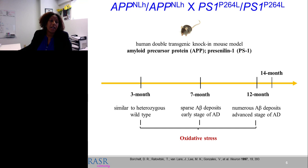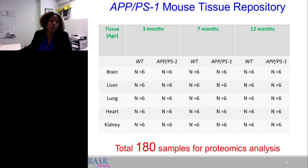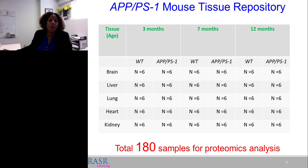In our tissue repository, we've collected tissue from different disease-stage animals — wild-type littermates and AD mutants — harvesting brain, liver, lung, heart, kidney, and other tissues, with at least six biological replicates per genotype per tissue at each disease stage. This creates 180 samples for proteomics analysis. The analytical challenge becomes: how do we best perform this experiment and increase throughput?